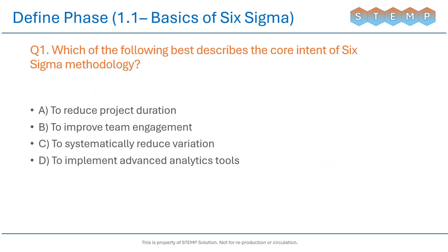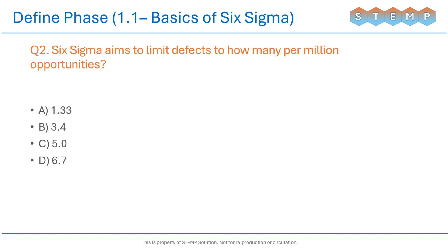Question 1: Which of the following best describes the core intent of Six Sigma methodology? Question 2: Six Sigma aims to limit defects to how many per million opportunities?